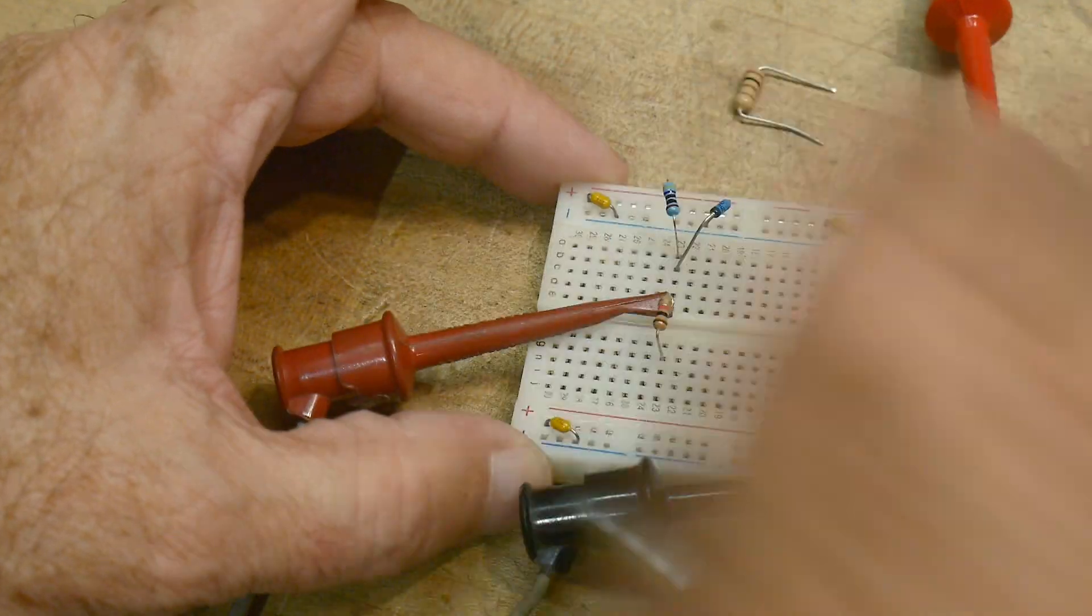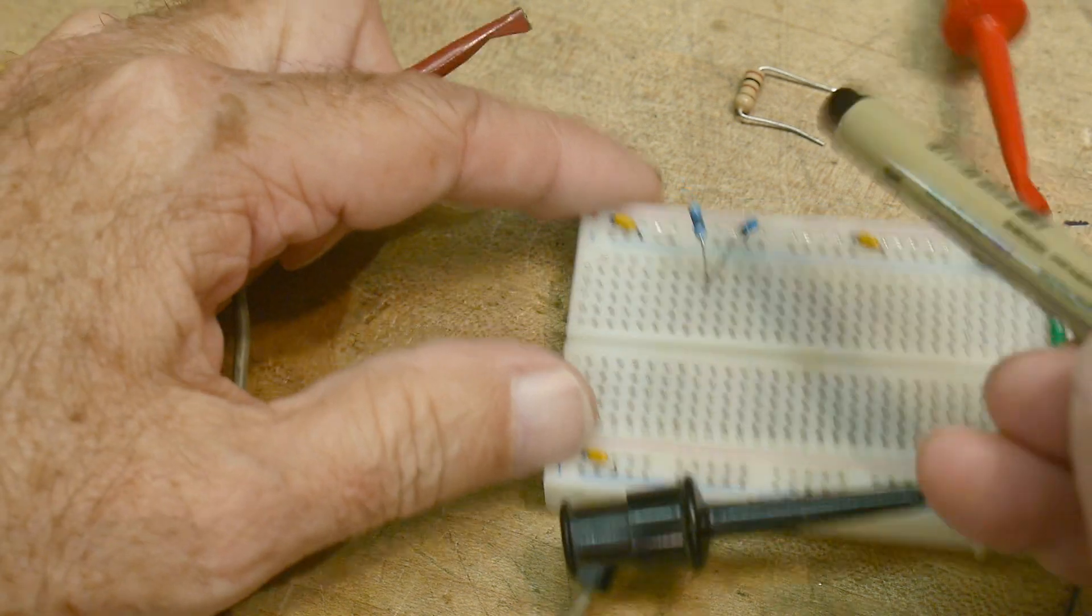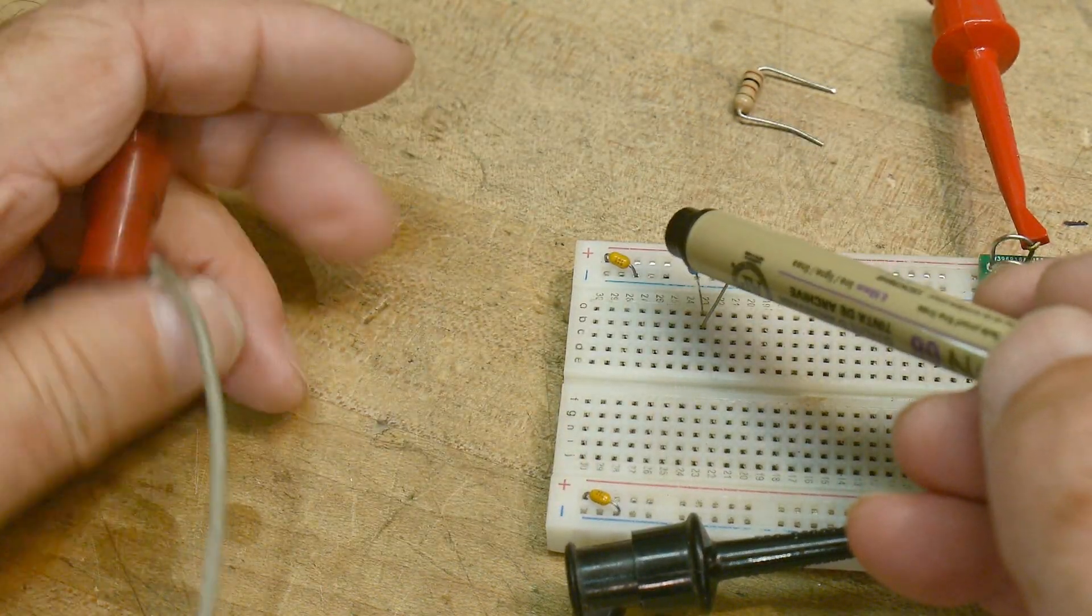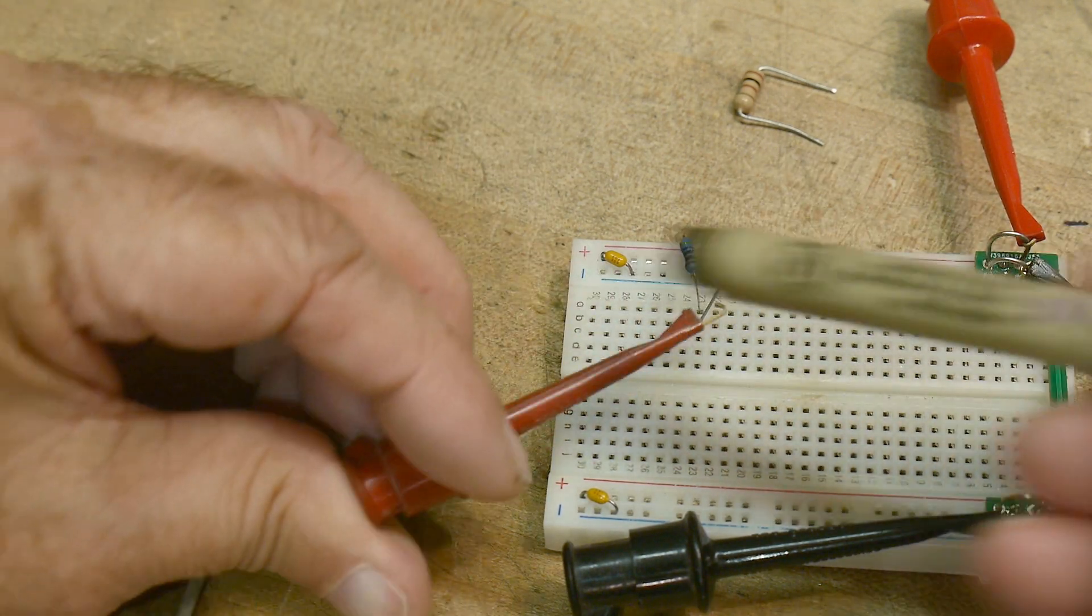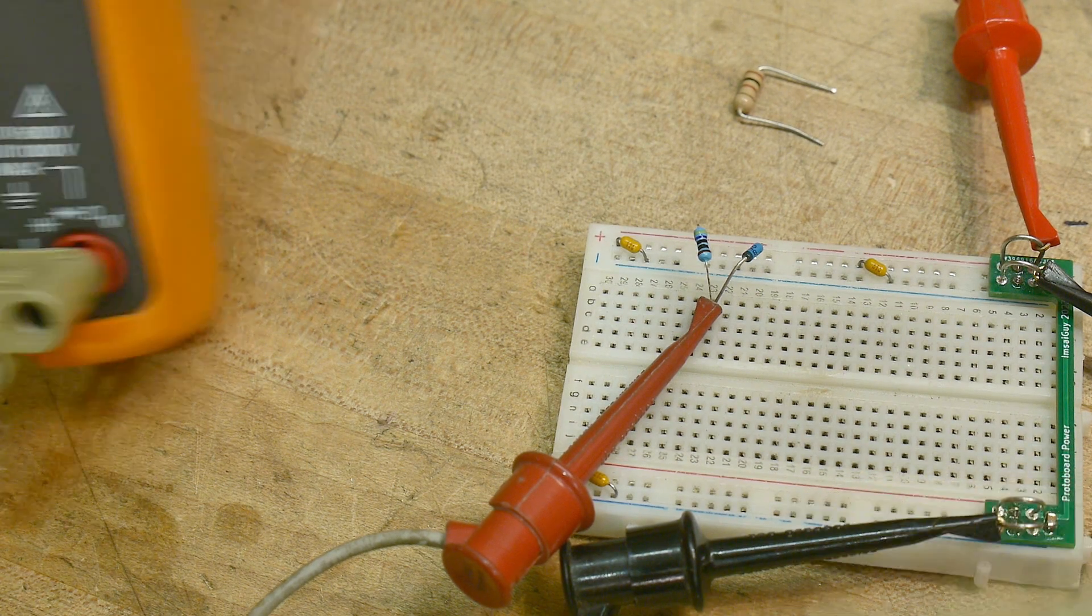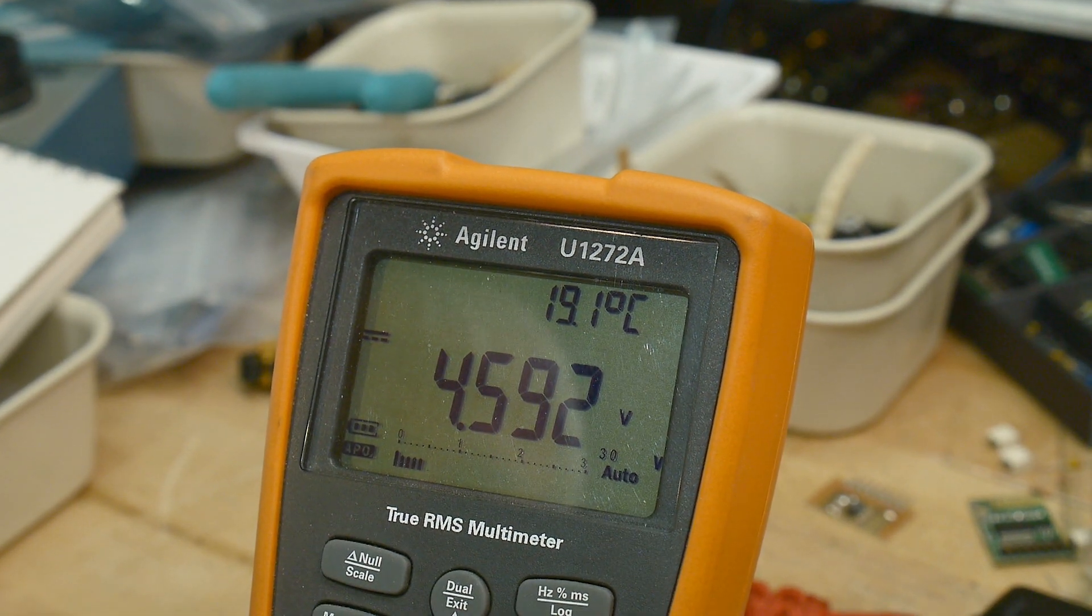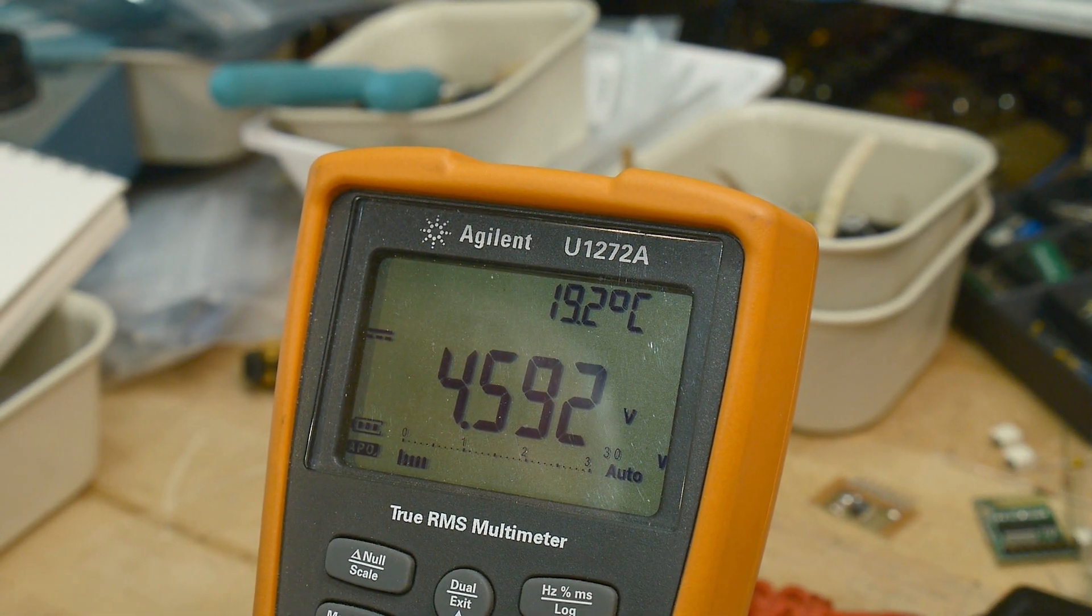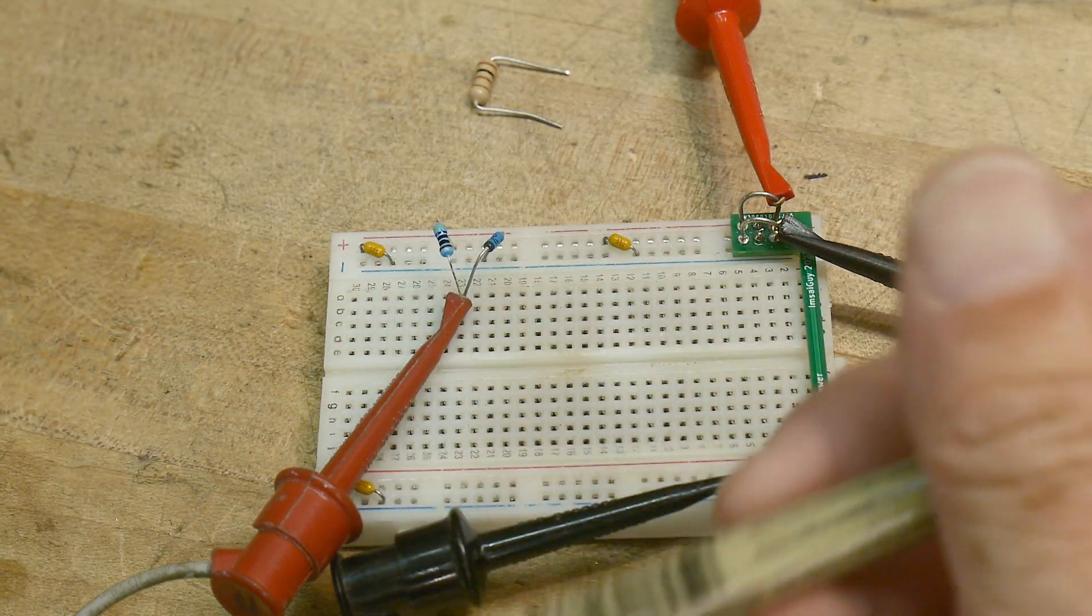All right. So here I have a 470 ohm resistor and our Zener diode going to ground reverse biased. Remember? All right. So let's measure its voltage, make sure it's Zener-ing. And we're getting 5.6. I mean, 4.6, which is close to 4.7. Like I said, they're not going to be totally accurate. You're just going to get something that's in the ballpark. And so it is doing its job.